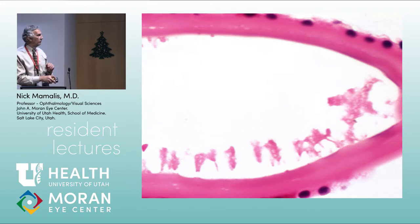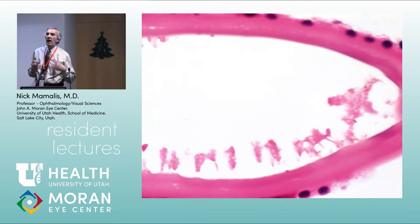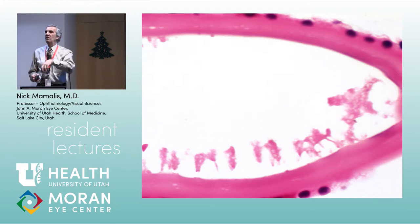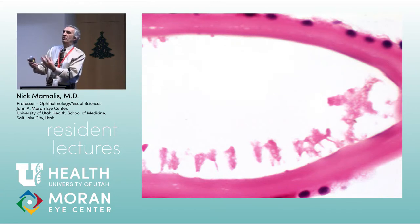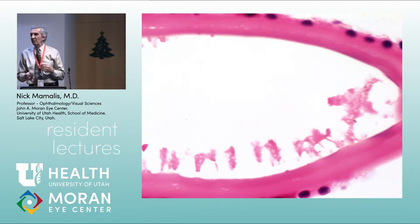Using PAS stain, you can see the exfoliative material on the lens capsule. The pattern is called an iron filing pattern — similar to iron shavings oriented by a magnet, which used to be demonstrated in shop class. The exfoliative fibers stand up perpendicularly in this characteristic pattern on the lens capsule.